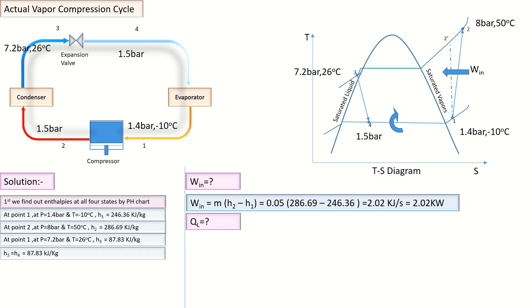Now, how much heat is absorbed in evaporator from the refrigerated space to provide the cooling effect? It is calculated by the difference of enthalpies multiplied by the mass flow rate. Enthalpy at Point 1 is 246 kJ/kg and Point 4 is 87 kJ/kg. By calculating, we find Q_e = 7.93 kilowatts of heat will be absorbed in evaporator.